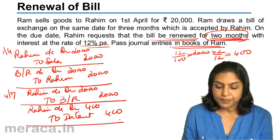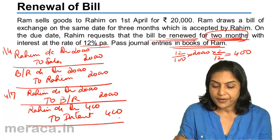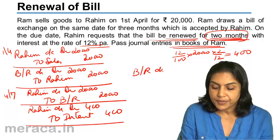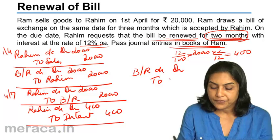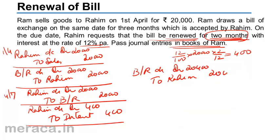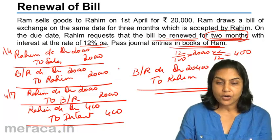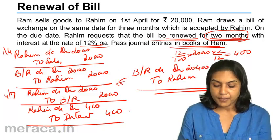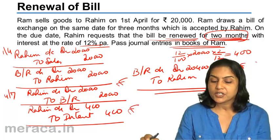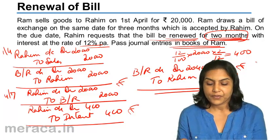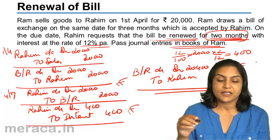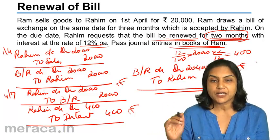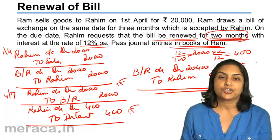Therefore, the value of the new bill will be 20,400. Entry for new bill: bills receivable account debit to Rahim, 20,400. So the first thing is to cancel the old bill, pass entry for interest, and create the new bill. This is the basic structure for passing entries for the renewing of a bill: cancel the old bill, pass entry for interest if any, and then pass entry for the new bill.